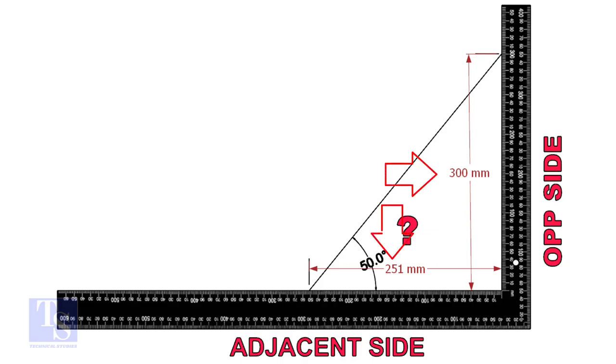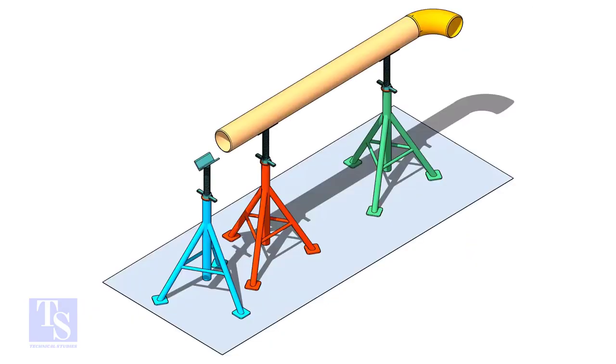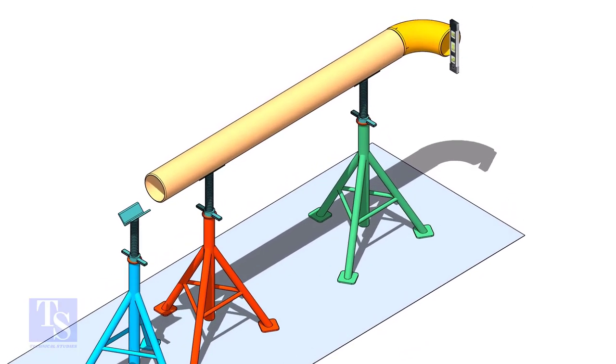Mark these dimensions on a large right angle as shown. Level the pipe and the elbow that is already fitted on the pipe.